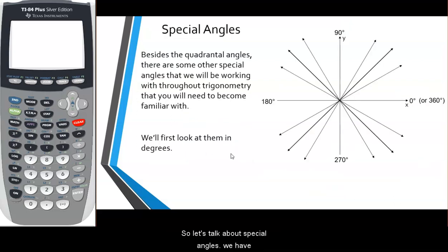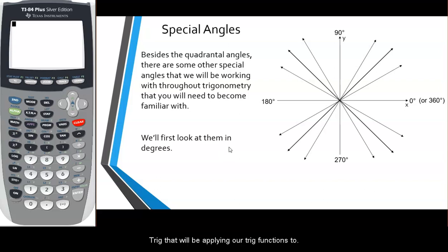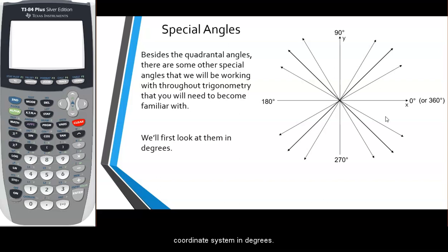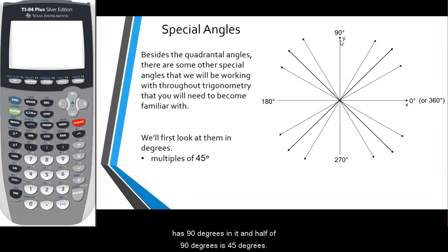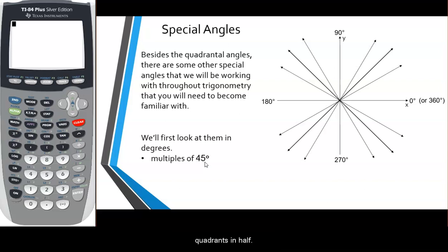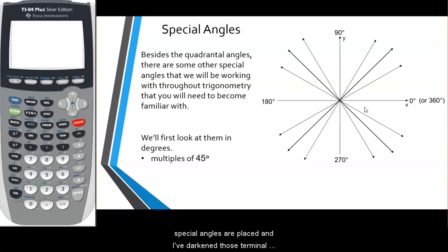Now let's talk about special angles that we'll be applying our trig functions to. Let's first look at these special angles on the coordinate system in degrees, and then we'll look at the same angles in radians. The first ones are the multiples of 45 degrees. Each quadrant has 90 degrees, and half of 90 is 45, so the multiples of 45 degrees split each quadrant in half. I've darkened those terminal sides to help you see them better.